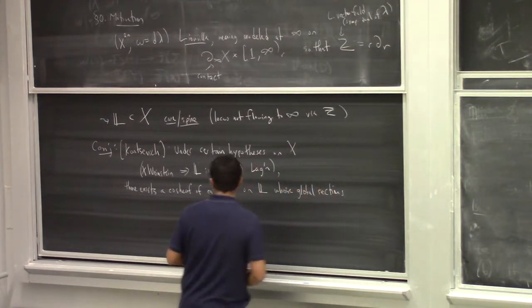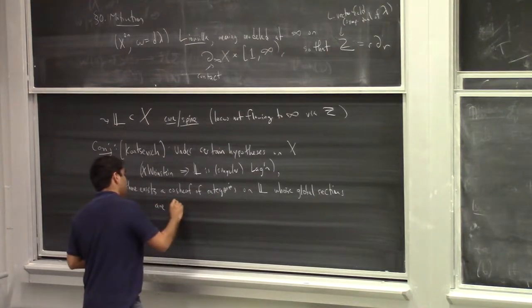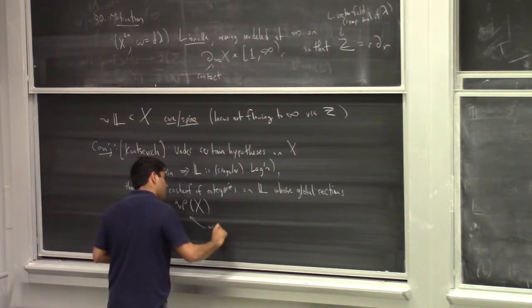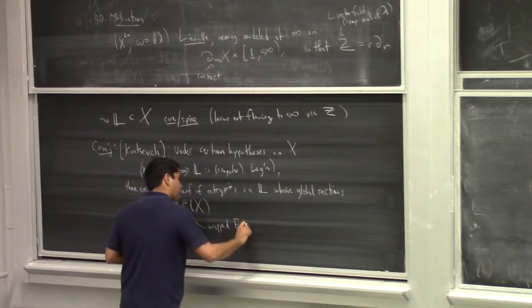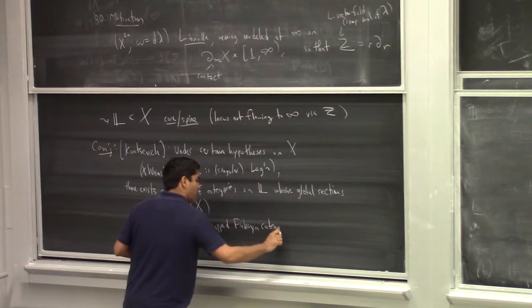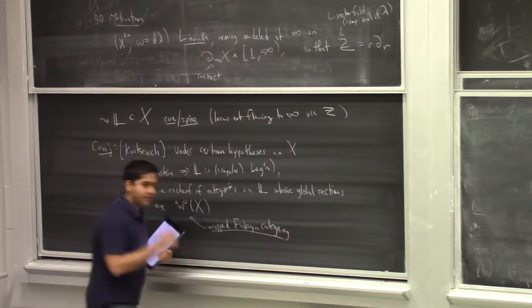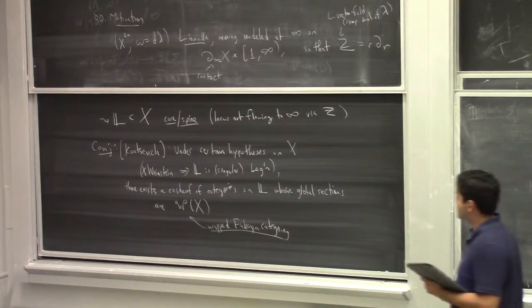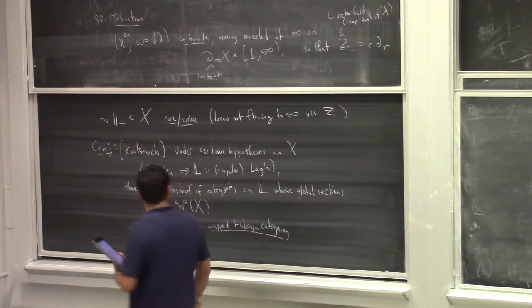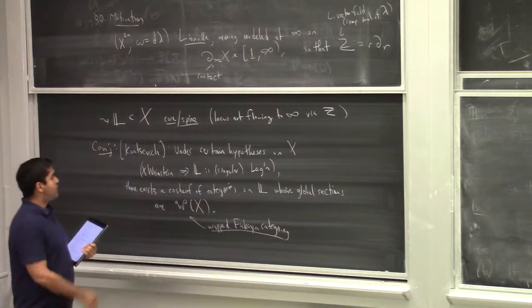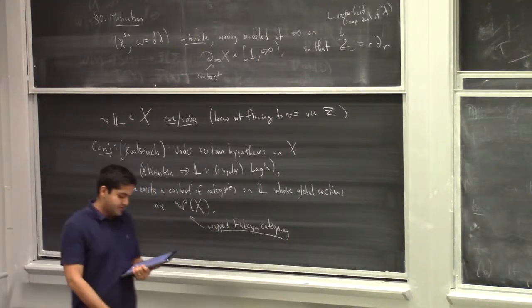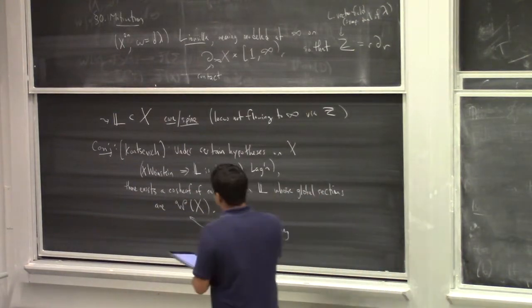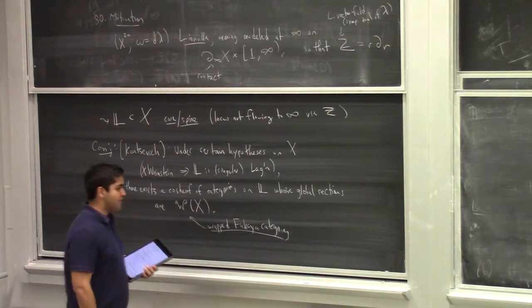Those global sections are the so-called wrapped Fukaya category. I'll recall in a word the definition — there have been talks on the wrapped Fukaya category earlier this week, so I'm not going to treat it as more than a conceptual entity for this talk. Under certain hypotheses, there's a cosheaf of categories on L whose global sections are the wrapped Fukaya category.